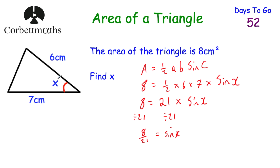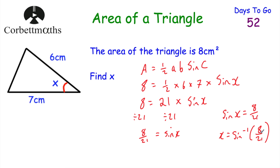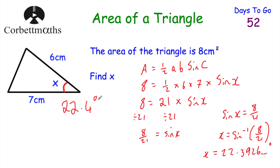We don't want the sine of the angle — we want the angle itself. So we use the inverse sine: X equals inverse sine of 8 over 21. Pressing shift sine of 8 over 21 on the calculator gives X equals 22.3926... degrees. Rounding to one decimal place, that's 22.4 degrees. Well done if you got that!